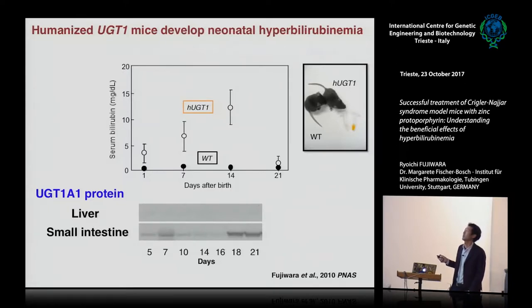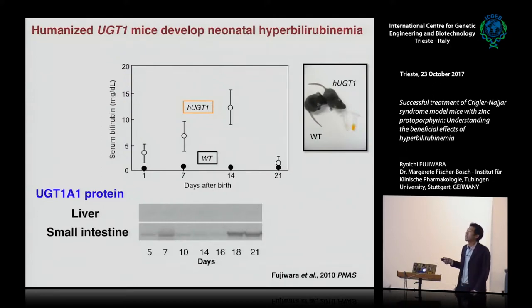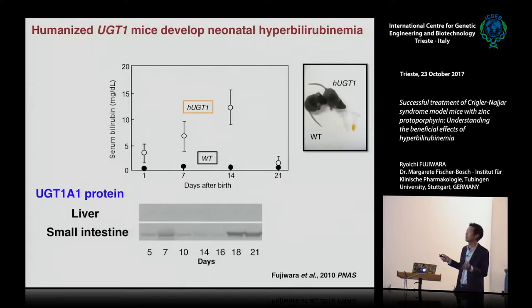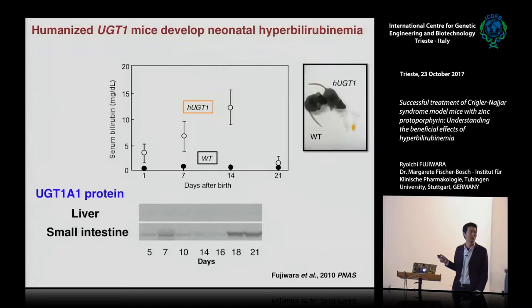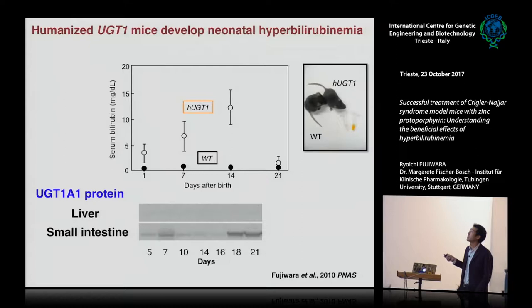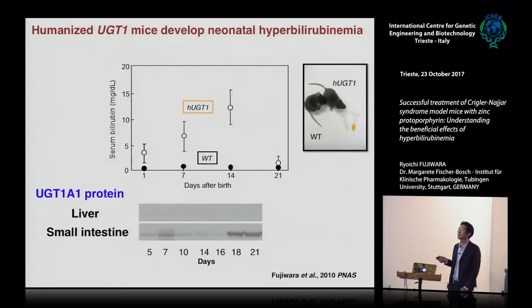They look totally identical, but the gene is different — one is humanized. In the wild-type mice, their bilirubin is quite low, and this is an example of their serum — it's clear. But the serum in the humanized UGT1 mice, the color is bright yellow. This is the color of bilirubin. That indicates they have jaundice during the neonatal period. If you measure the serum bilirubin levels, the bilirubin level is really high compared to the wild-type mice.